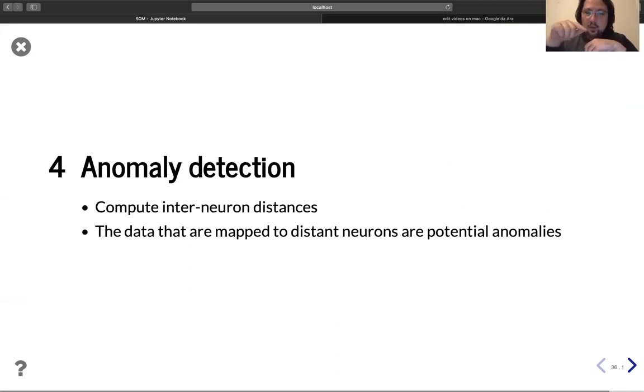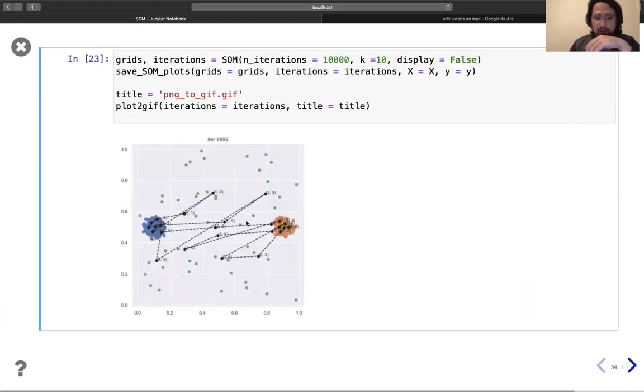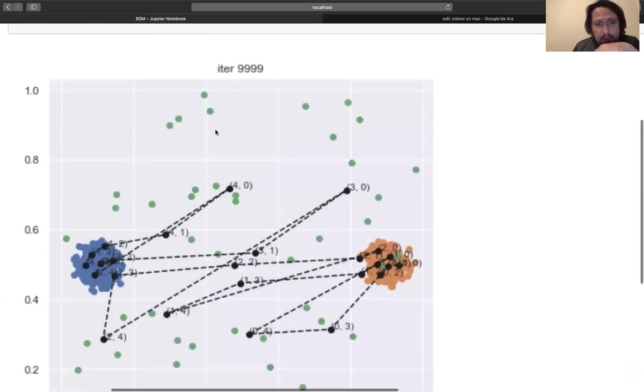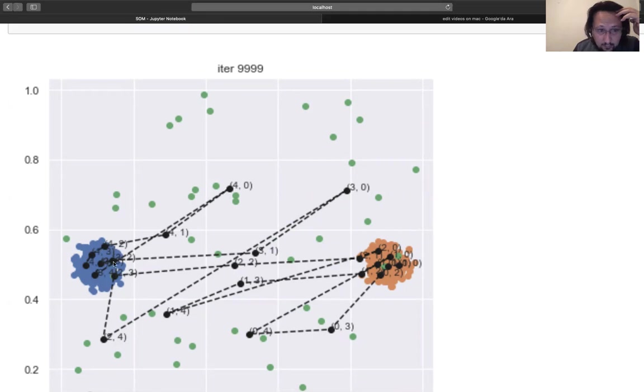We compute inter-neuron distance in terms of weights. After that, the data that are mapped to distant neurons are potential anomalies. So here, for example, if we think, for example, this data is mapped to this neuron.